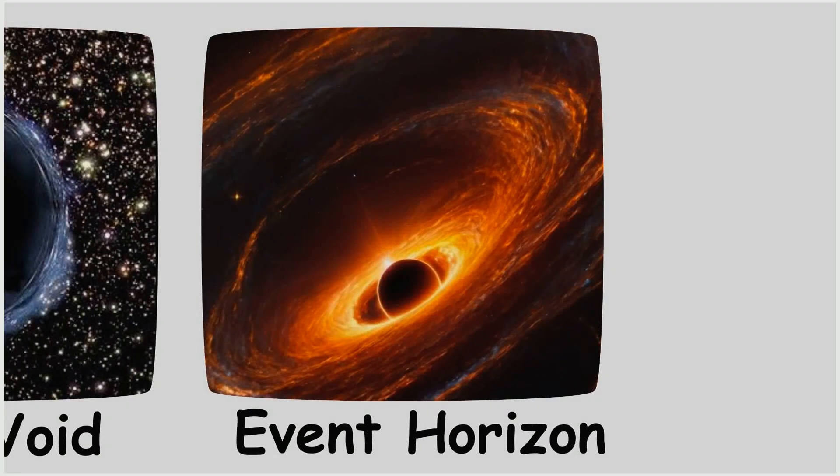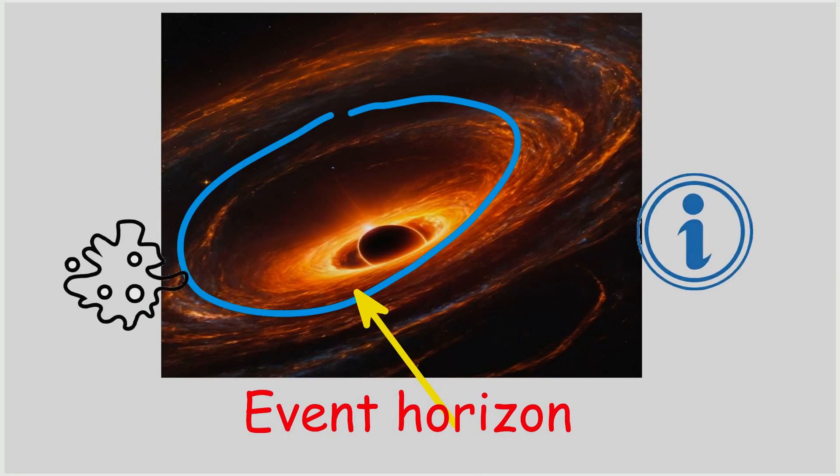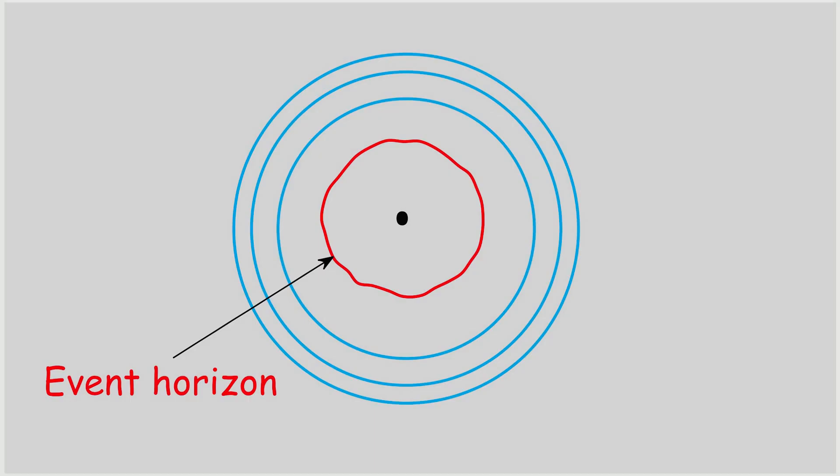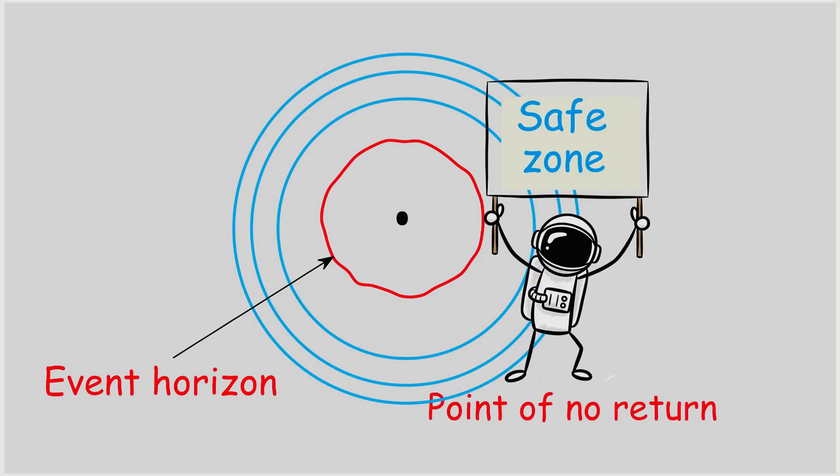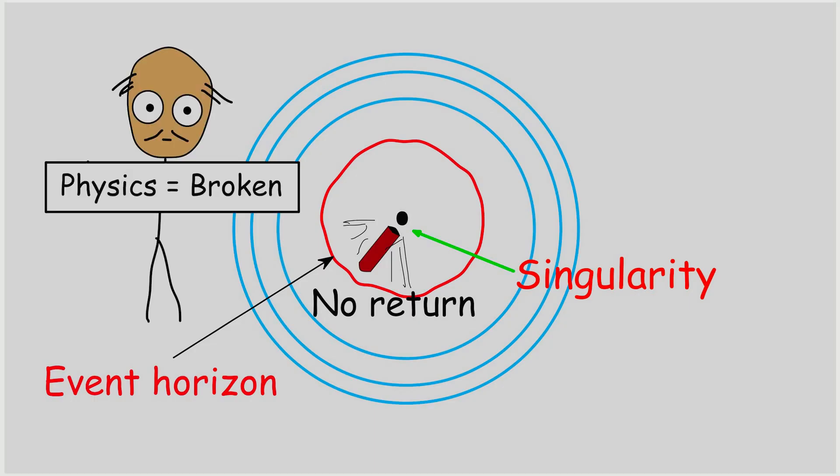The Event Horizon of a Black Hole. The event horizon is the boundary around a black hole beyond which no information or matter can escape. It is not a physical surface but a point of no return. Once an object crosses this threshold, it is irrevocably pulled into the singularity at the black hole's center, a point where the curvature of space-time becomes infinite and the known laws of physics break down.